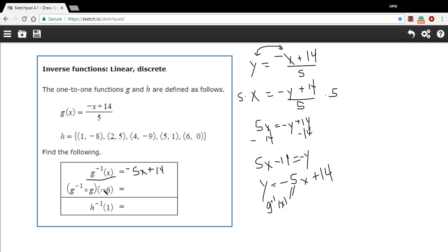So let me rewrite it this way. g to the negative 1 composed with g is just going to equal, of x, is just going to equal x. So if you put in a negative 6 for x, you're going to get negative 6 out. So this problem is kind of a gimme. It's the value that you put in is the value you get out.